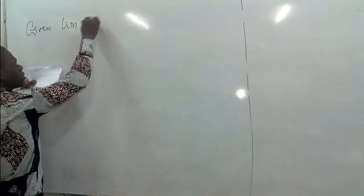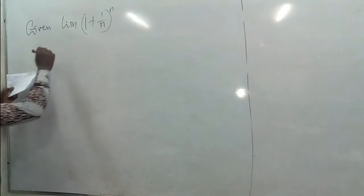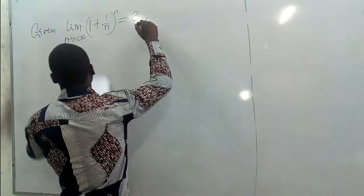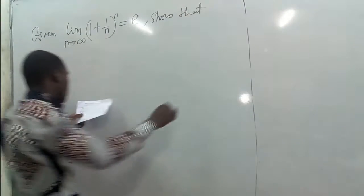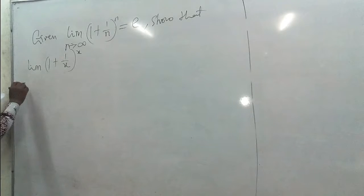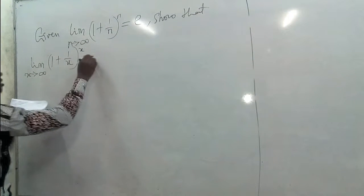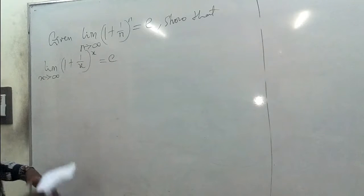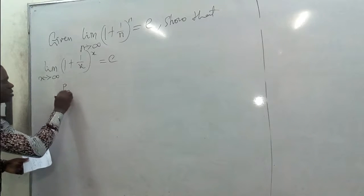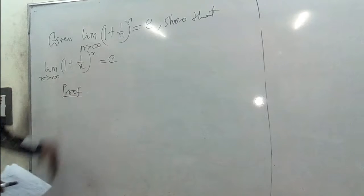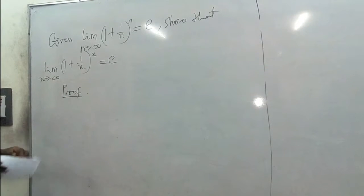So, given that the limit of (1 + 1/n)^n as n approaches infinity is equal to e, and we are calling that x, we are showing that the limit of (1 + 1/x)^x as x approaches infinity is also equal to e. We are proving that if this is equal to e, then this is also equal to e. That is all we want to do, and we want to do that by imposing certain conditions.